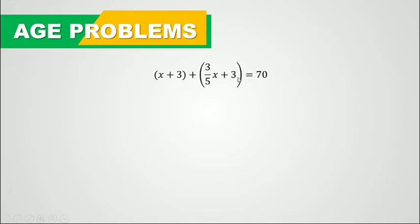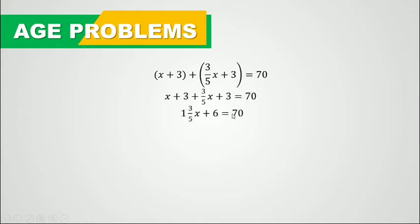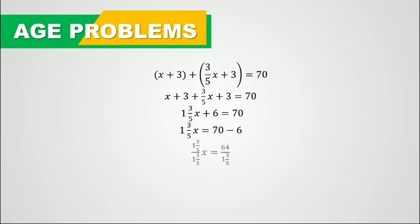So x plus 3 plus 3 fifths x plus 3 equals 70. Eliminating the parentheses: x plus 3 plus 3 fifths x plus 3 equals 70. Combining like terms: x plus 3 fifths x is 1 and 3 fifths x, and 3 plus 3 is 6, giving us 1 and 3 fifths x plus 6 equals 70. We transpose 6 to the right — since 6 and 70 are both constants they can be combined — so 1 and 3 fifths x equals 70 minus 6, which is 64.